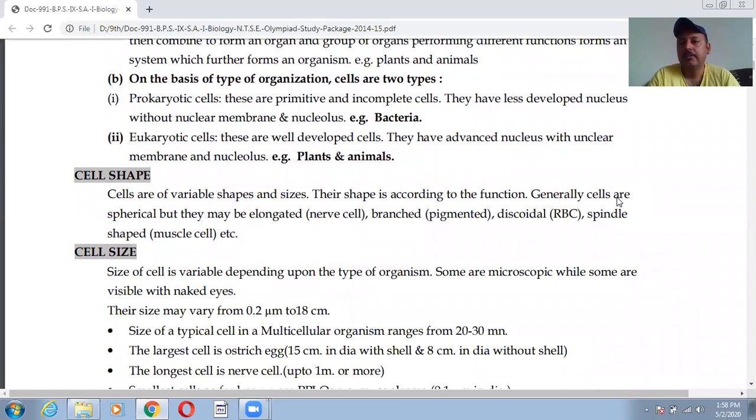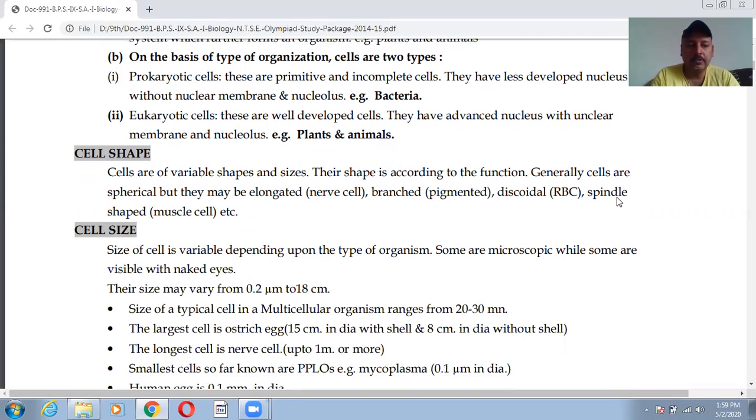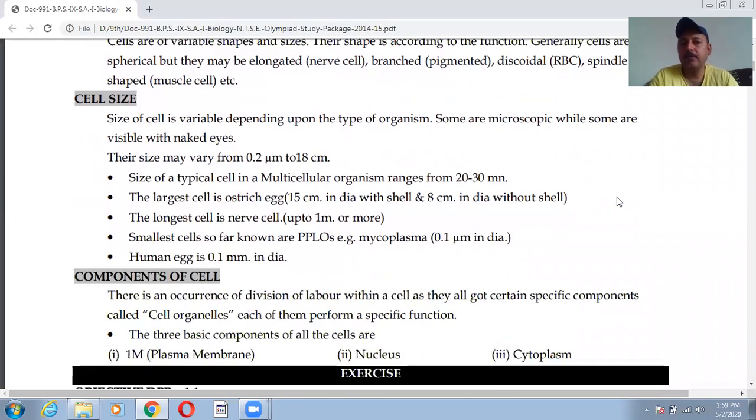Cell shapes: cells are of various shapes and sizes because the shape is according to their function. So they may be spherical, discoid, quadrilateral, or spindle shaped. Cell size: on the basis of size, cells vary from micro to large. Like the size may vary from you can see 0.2 micrometer to 18 centimeter.